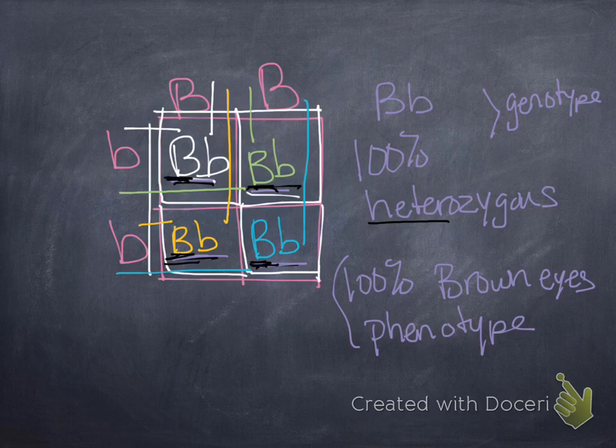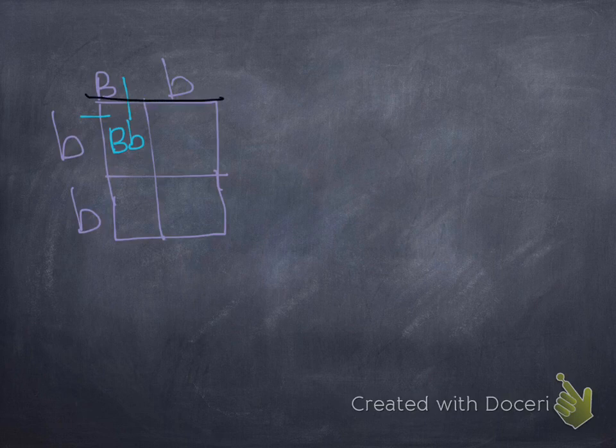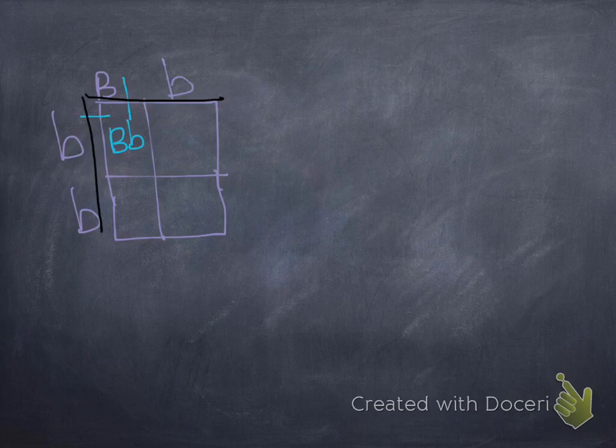Okay, we'll do another example. Here's our next example. So draw your Punnett square. You've got big B, little b for your genotype and you've got little b, little b for your genotype. And I already filled in the first box.